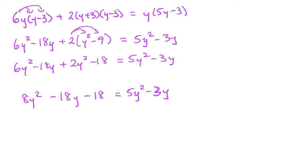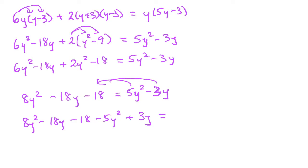Now I move all terms to one side. Subtracting 5y squared and adding 3y on both sides gives 8y squared minus 18y minus 18 minus 5y squared plus 3y equals 0. Combining like terms: 8y squared minus 5y squared gives 3y squared; minus 18y plus 3y gives minus 15y; and then minus 18 equals 0.